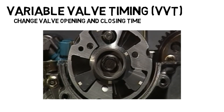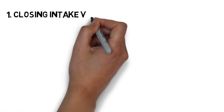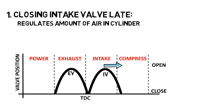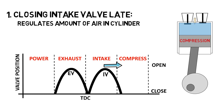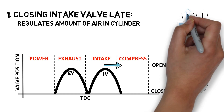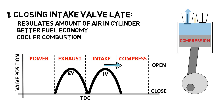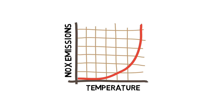But why would you want to do this? Let's name a few examples. Closing the intake valve late is a strategy used to regulate the amount of air in the cylinder. As the piston moves up on the compression stroke, some of the fresh mixture gets pushed back into the intake manifold. The result is better fuel economy, cooler combustion, and less NOx emissions. The hotter the gas temperature, the faster the NOx rate formation. Therefore, lowering combustion temperature is an effective NOx reduction strategy.